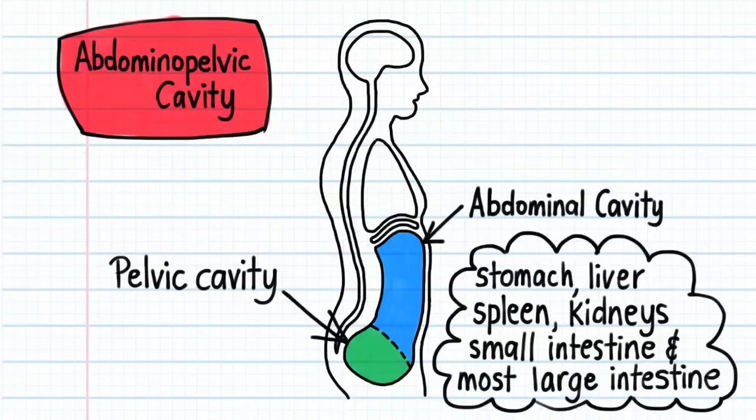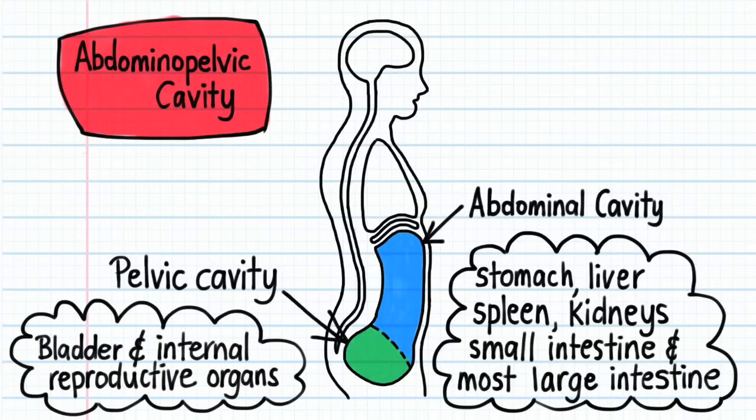It also contains the kidneys, small intestine, and most of the large intestine. The pelvic cavity contains the bladder and internal reproductive organs.